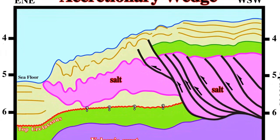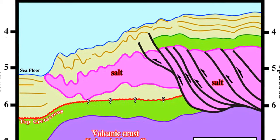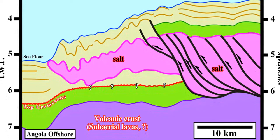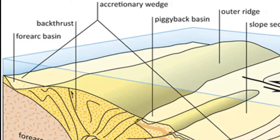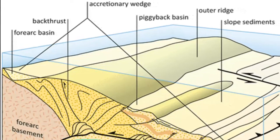Composed of numerous plutons, batholiths form the core of the Sierra Nevada in California and are prevalent in the Peruvian Andes. Most batholiths are composed of intrusive igneous rocks with an intermediate to felsic composition, such as diorite and granodiorite, although granites have been observed. Granite is sparse in the batholiths along the western margin of North America, but significant amounts occur in the core of the Appalachian Mountains.